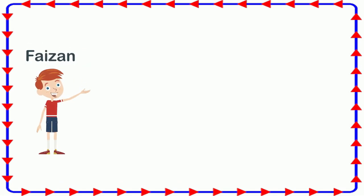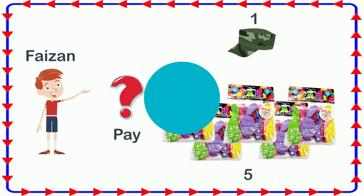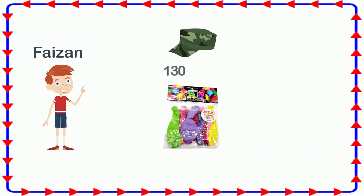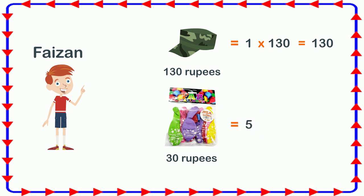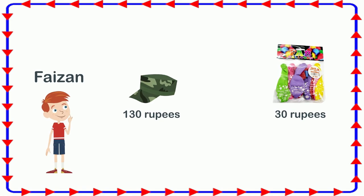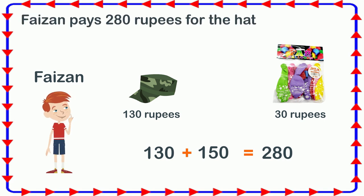Next, Faizan buys a hat and 5 packs of balloons. How much does he pay for them? We will look at the price of each item separately and then add them together. 1 hat = 1 × 130 = 130 rupees; 5 packs of balloons = 5 × 30 = 150 rupees. Let's add these prices: 130 + 150 = 280 rupees. Hence, Faizan pays 280 rupees for the hat and balloons that he bought.